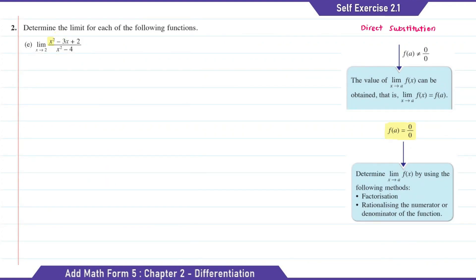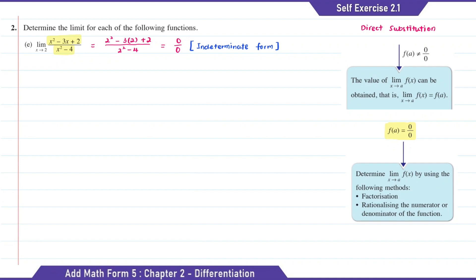Question E: we're going to substitute x with 2 as x is approaching 2. So 2 squared minus 3 times 2 plus 2 over 2 squared minus 4. The answer of this is 0 over 0.